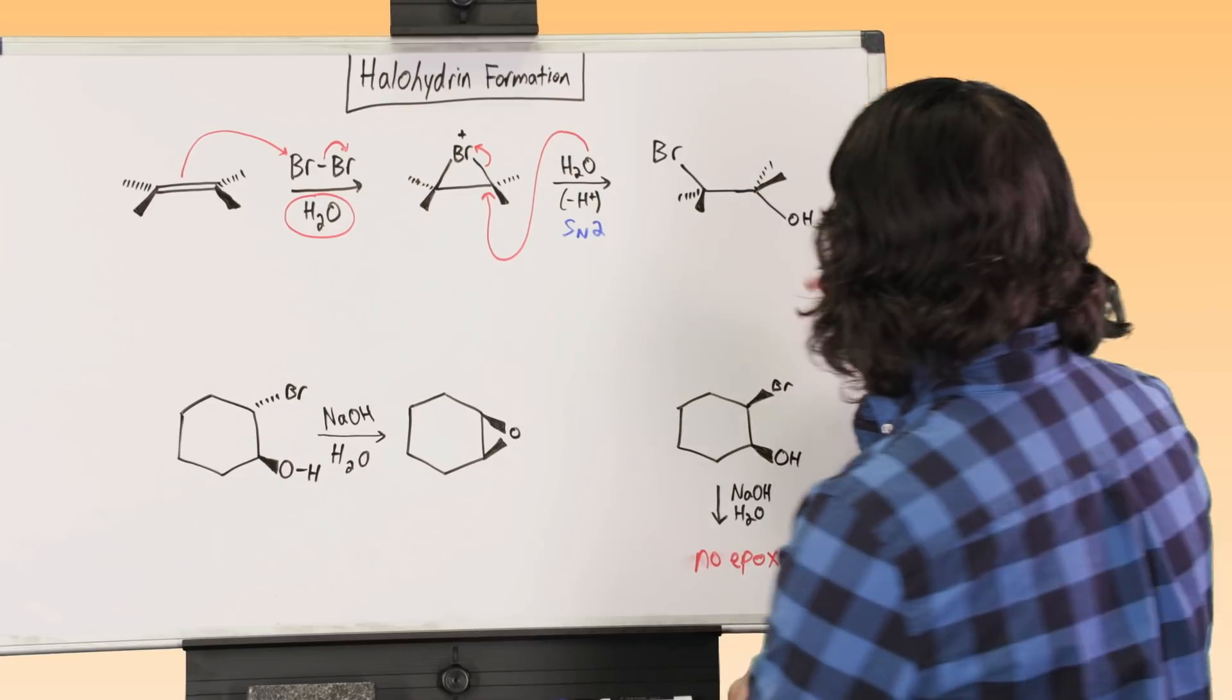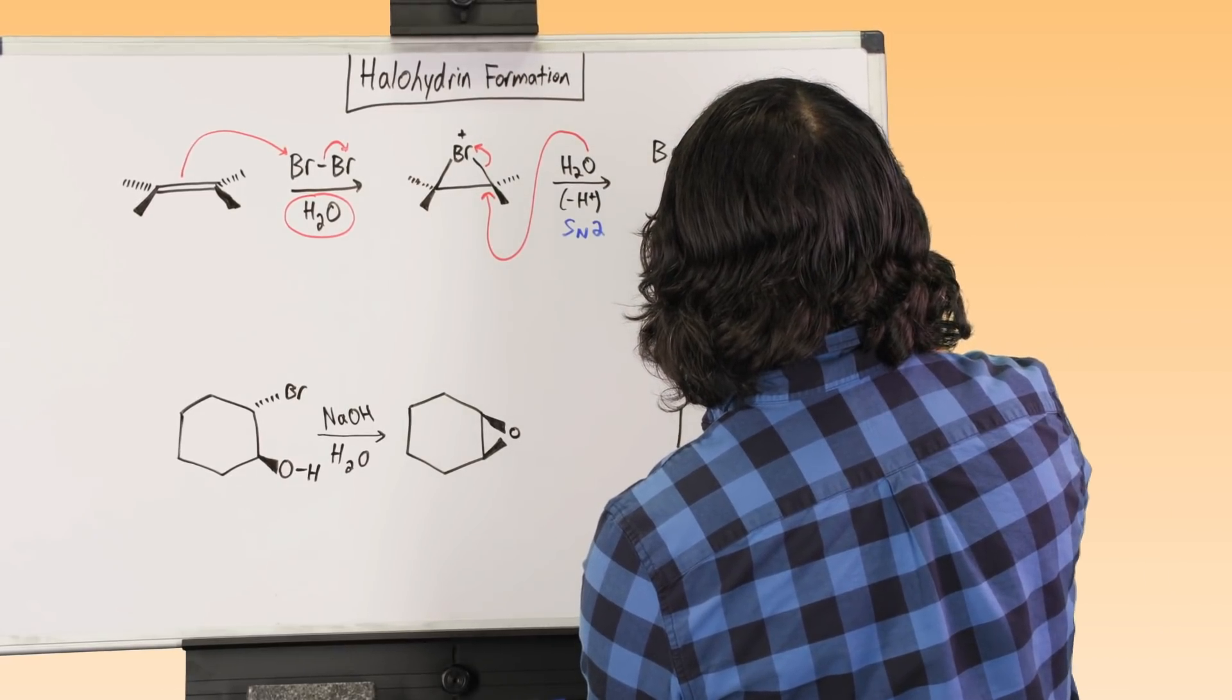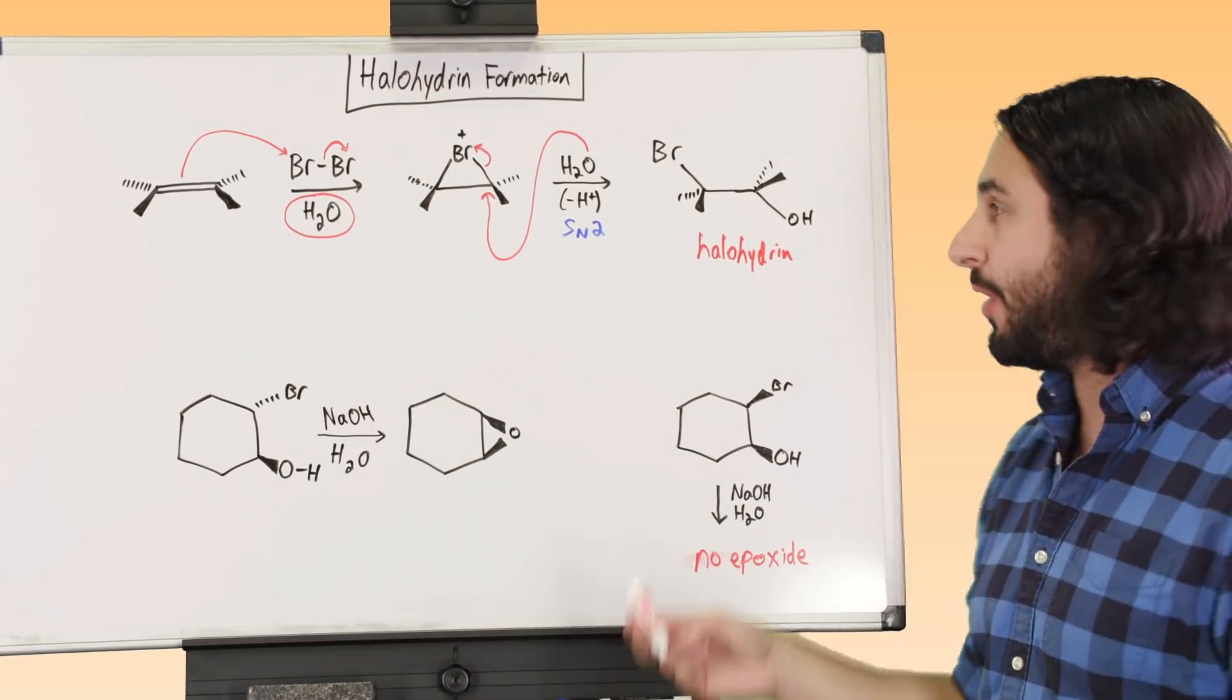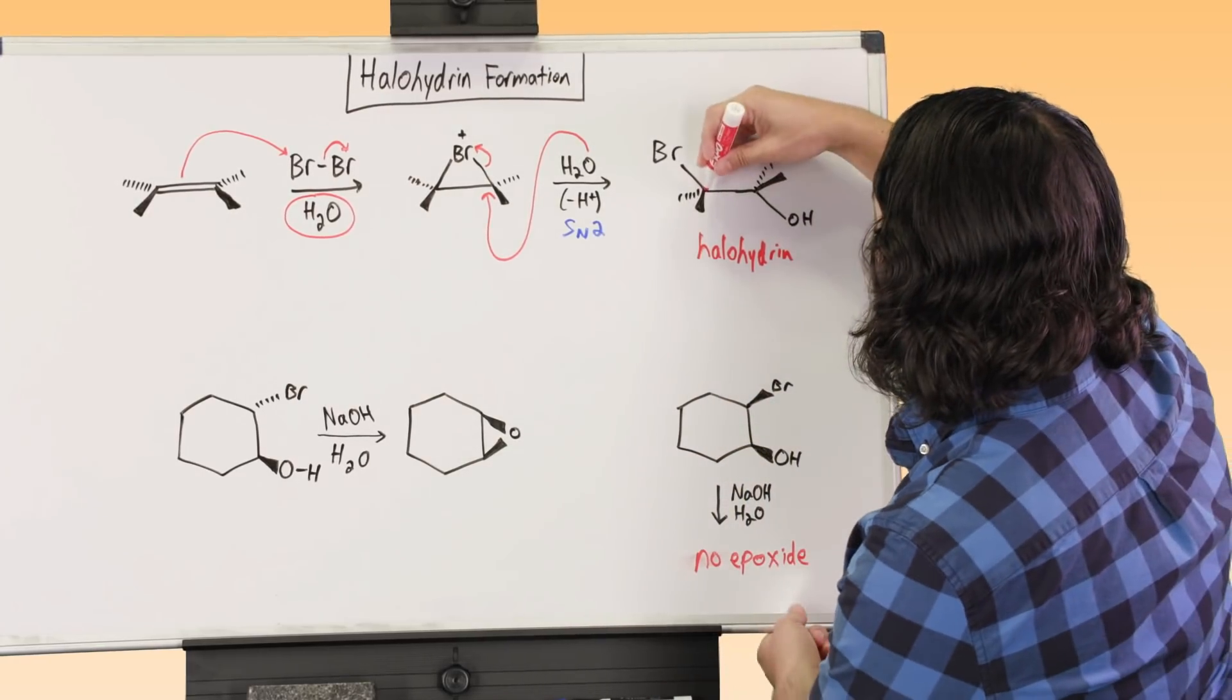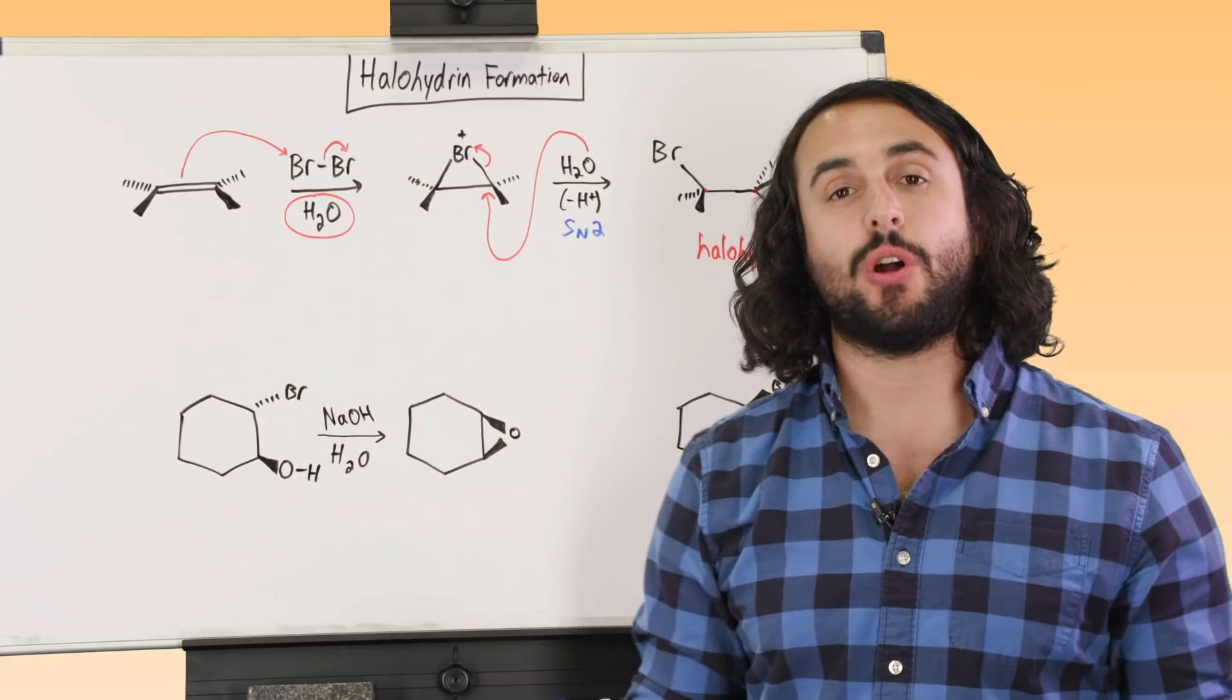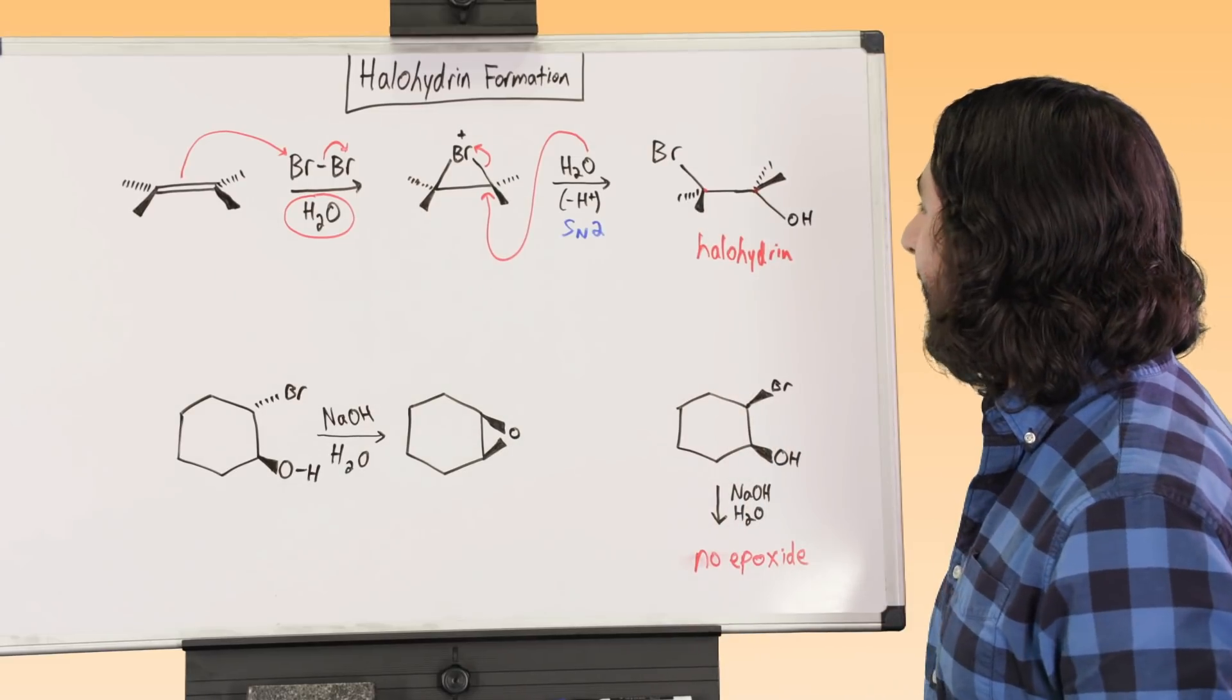But we've got this here, and this is a halohydrin. So what is a halohydrin? Well the name kind of speaks for itself. We've got a halogen and we've got a hydroxyl, and they are on adjacent carbons. So a halogen and a hydroxyl, when they're on adjacent carbons, that is a functional group called a halohydrin.